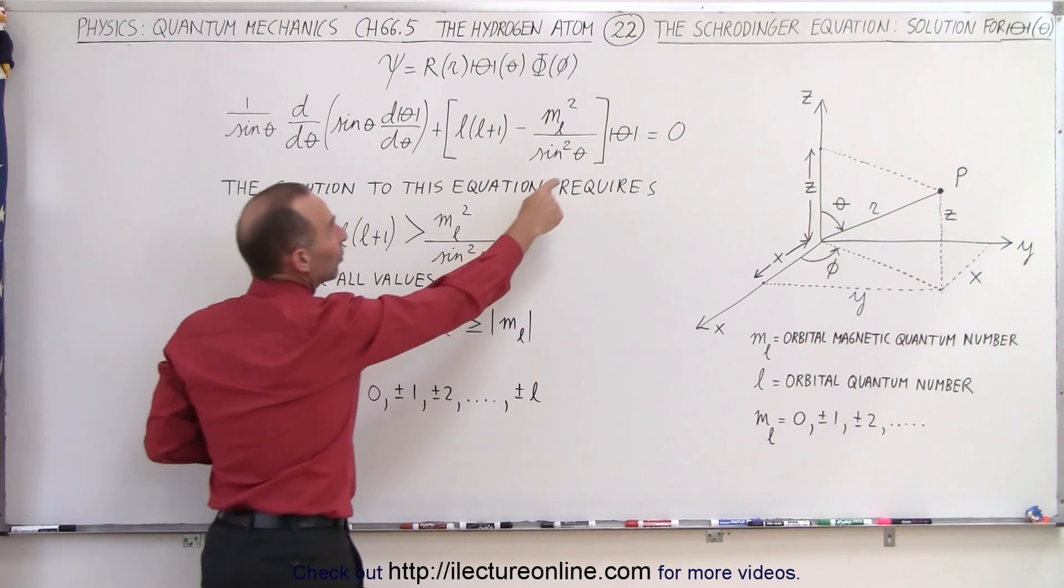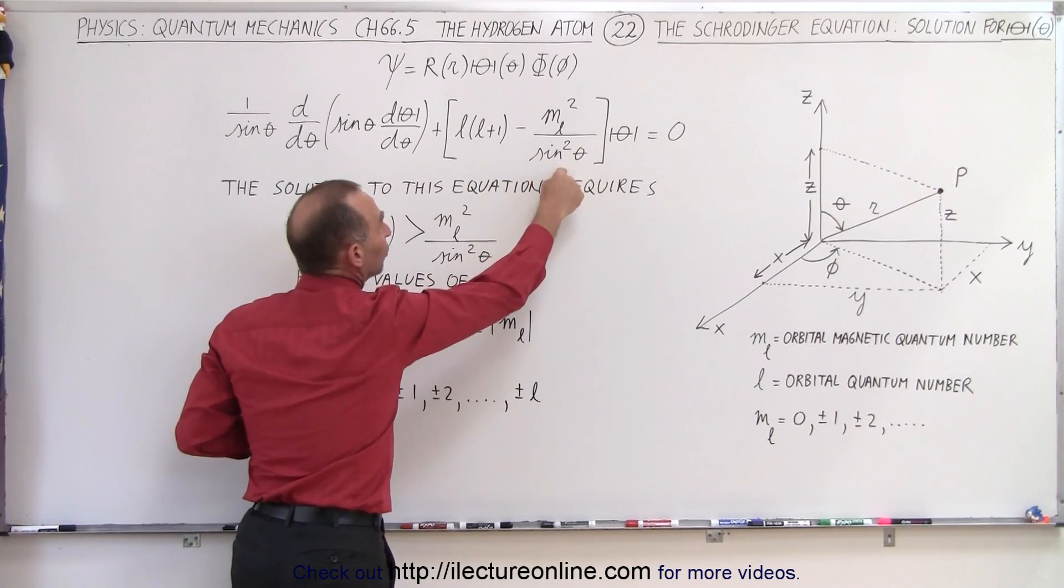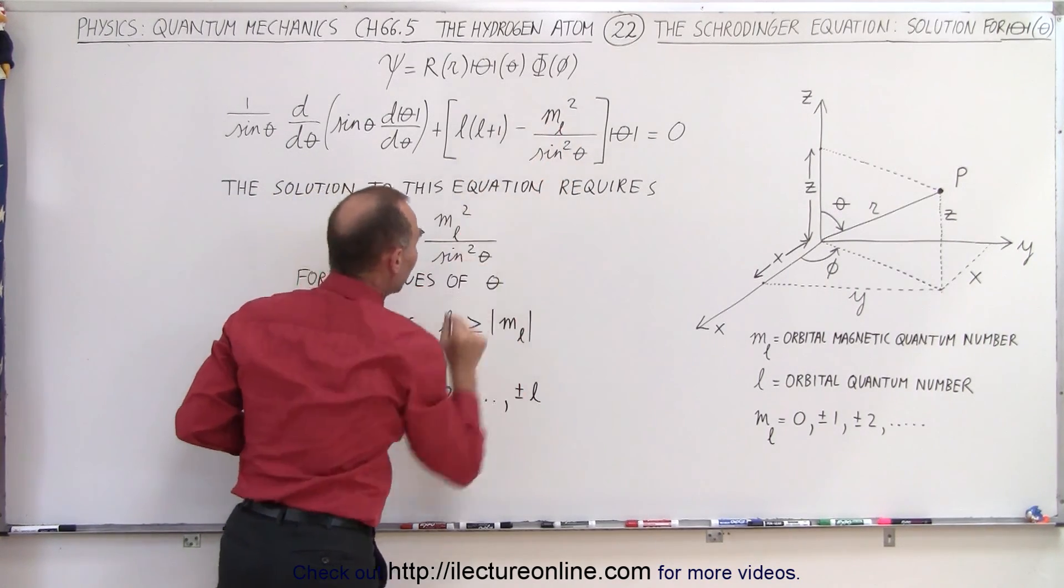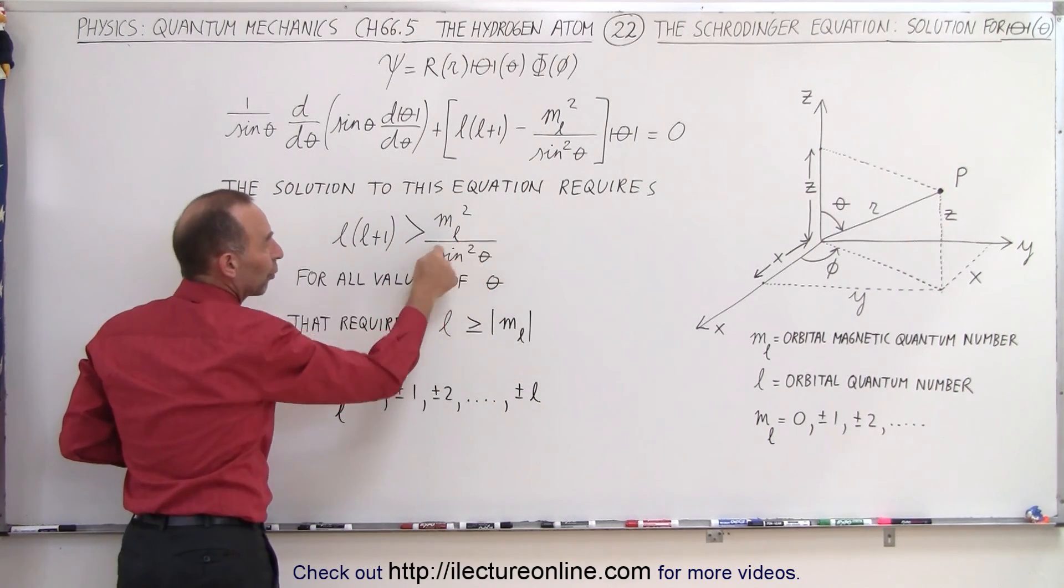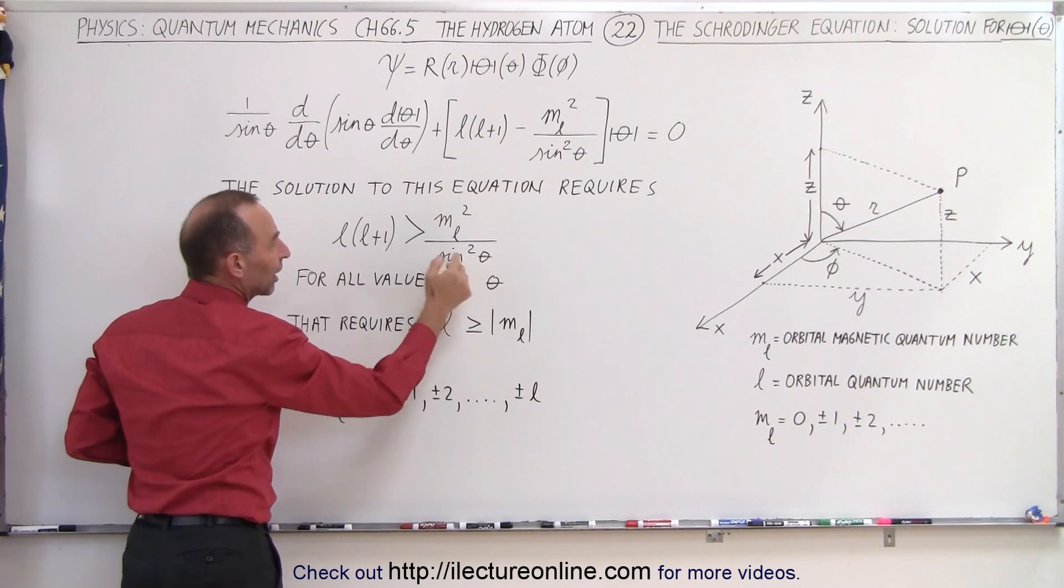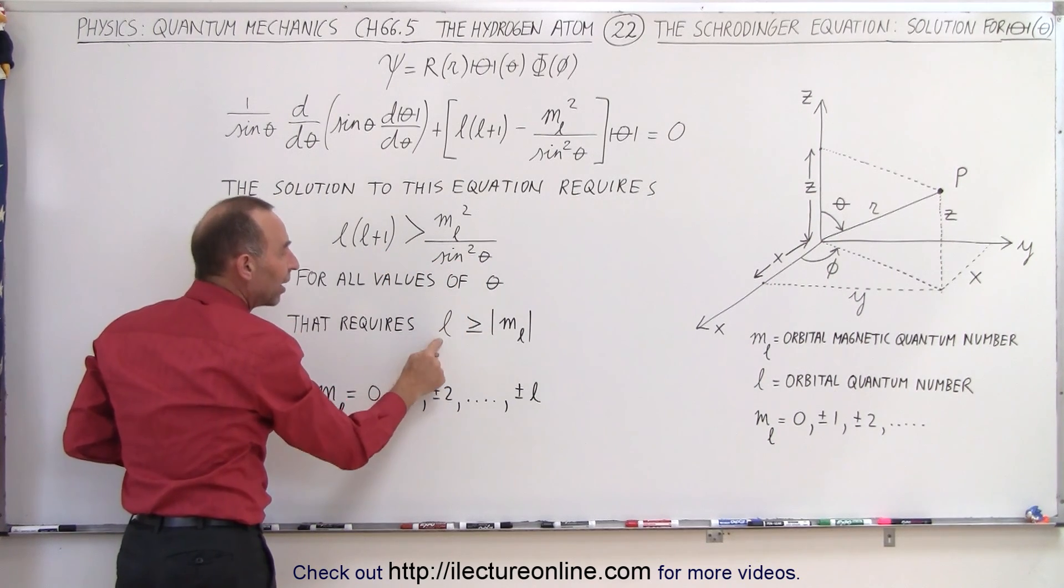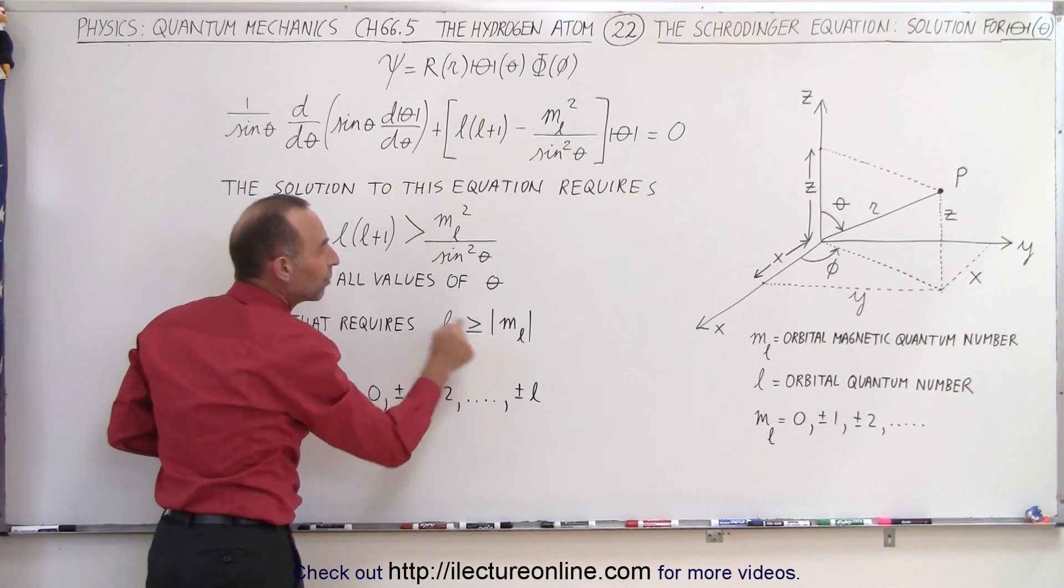When theta equals 90 degrees, this becomes equal to one, and then again this should be greater than this, so the requirement is that if this must be greater than this, regardless of the value of theta, that can only be accomplished if l is greater than or equal to m sub l.